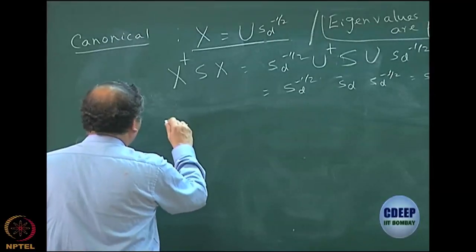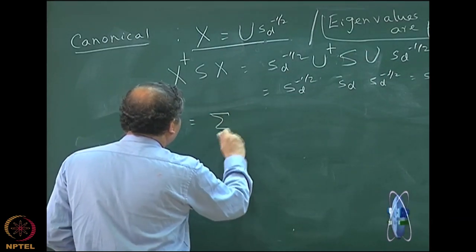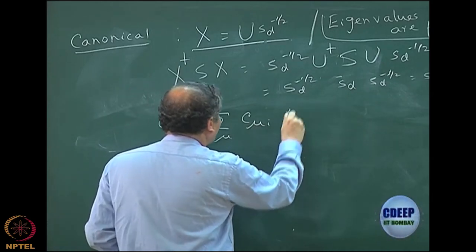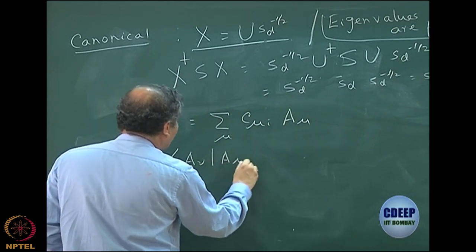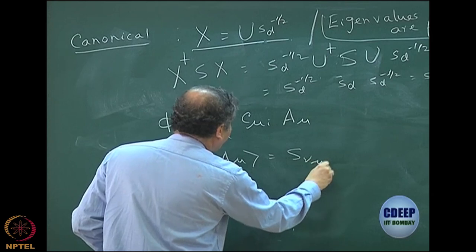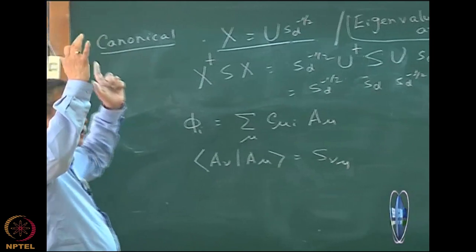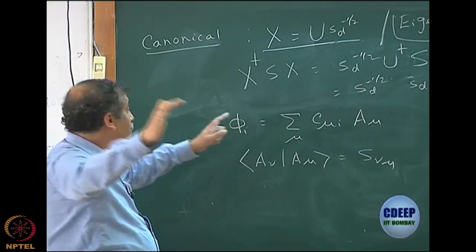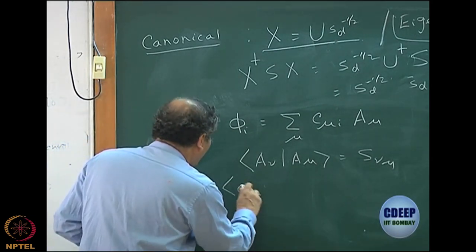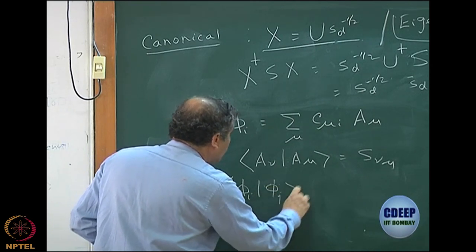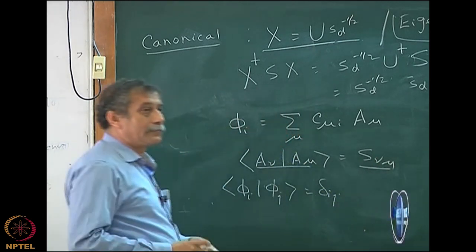Let me go back and analyze the fact that when I said φ_i is a sum over the basis, the overlap between the basis functions or the original basis functions is S_νμ. I must mention here that we started with spin orbitals which are orthonormal, which means my space orbitals for closed shells are also orthonormal. So φ_i|φ_j is also δ_ij. However, the atomic orbitals, of course, have an overlap matrix.